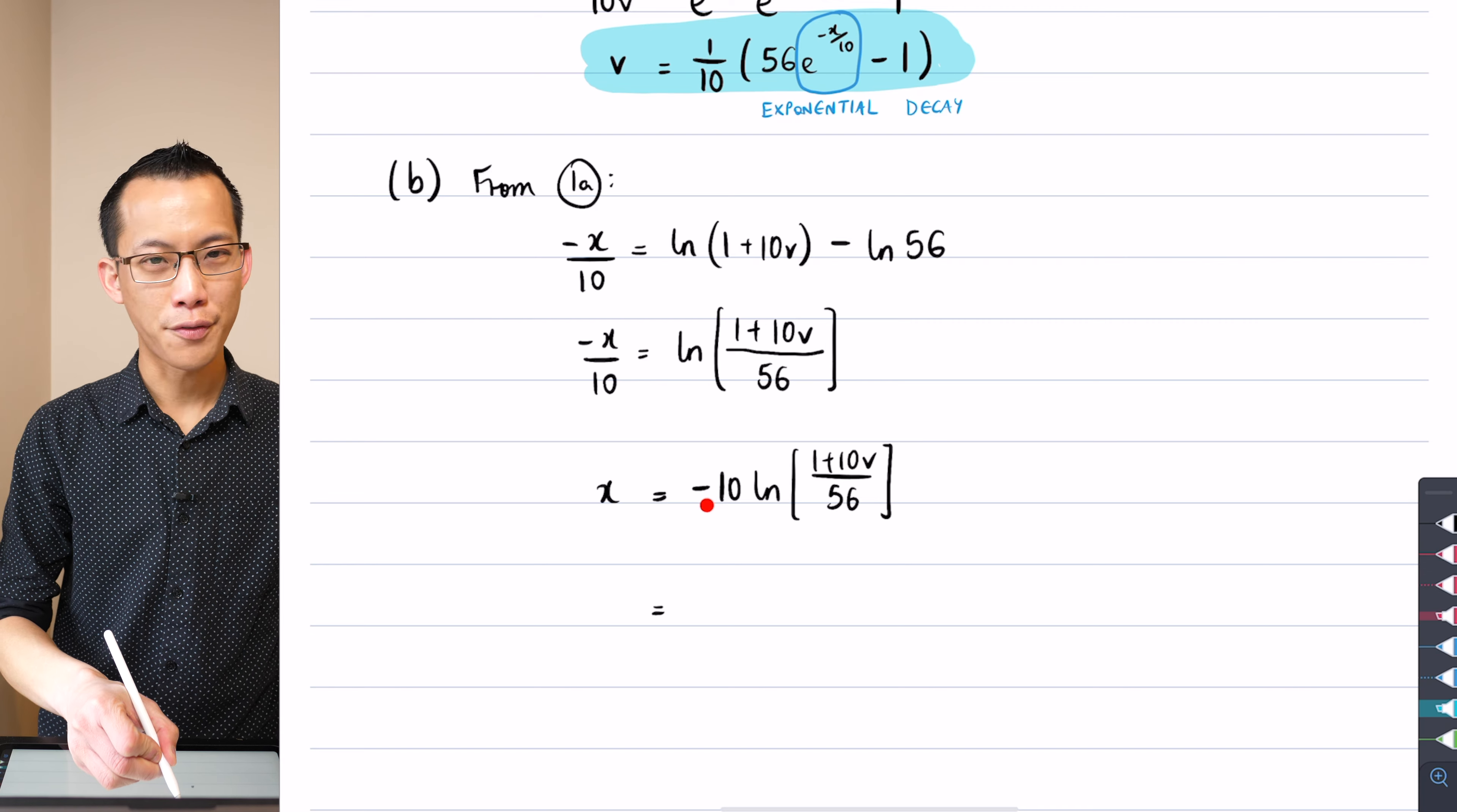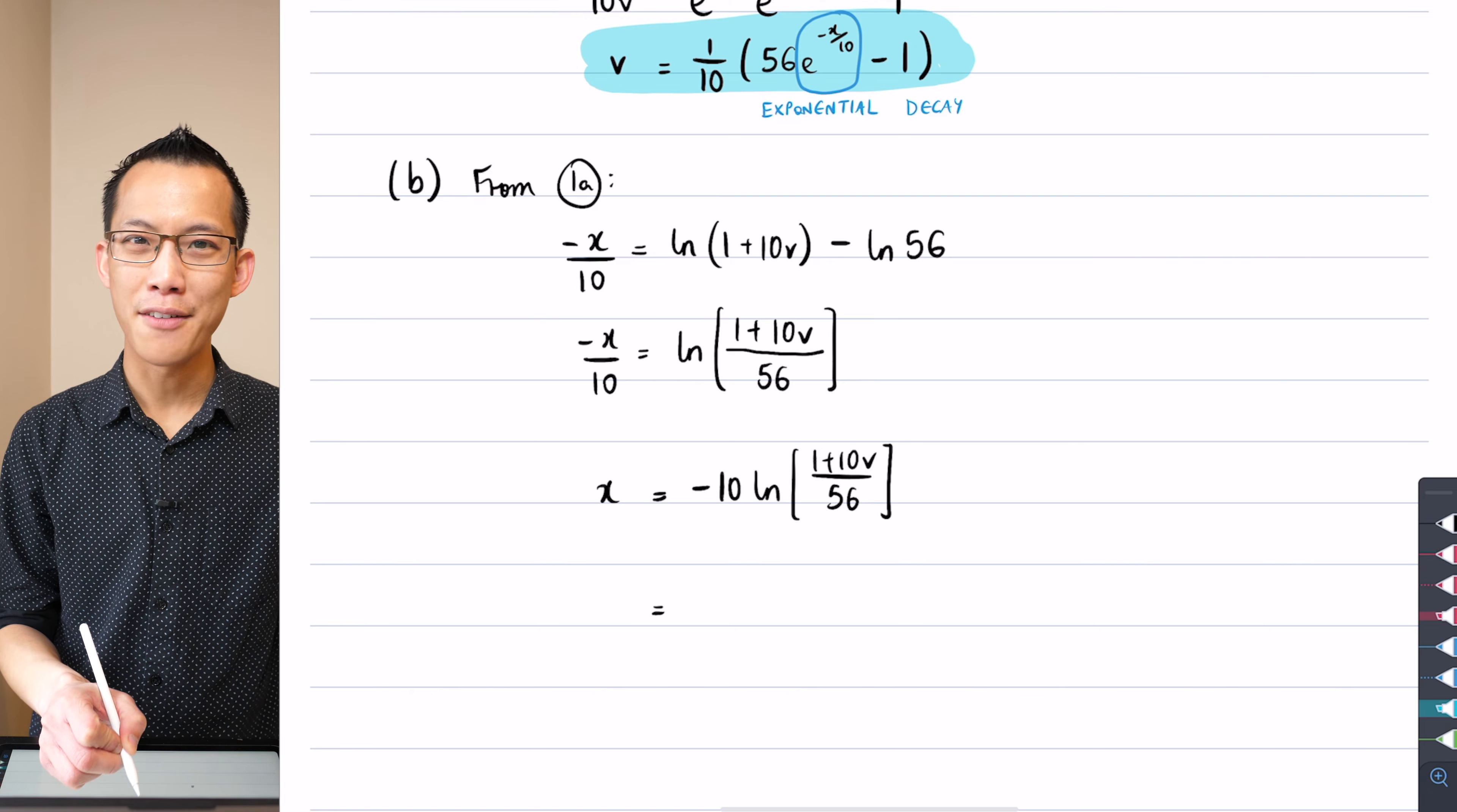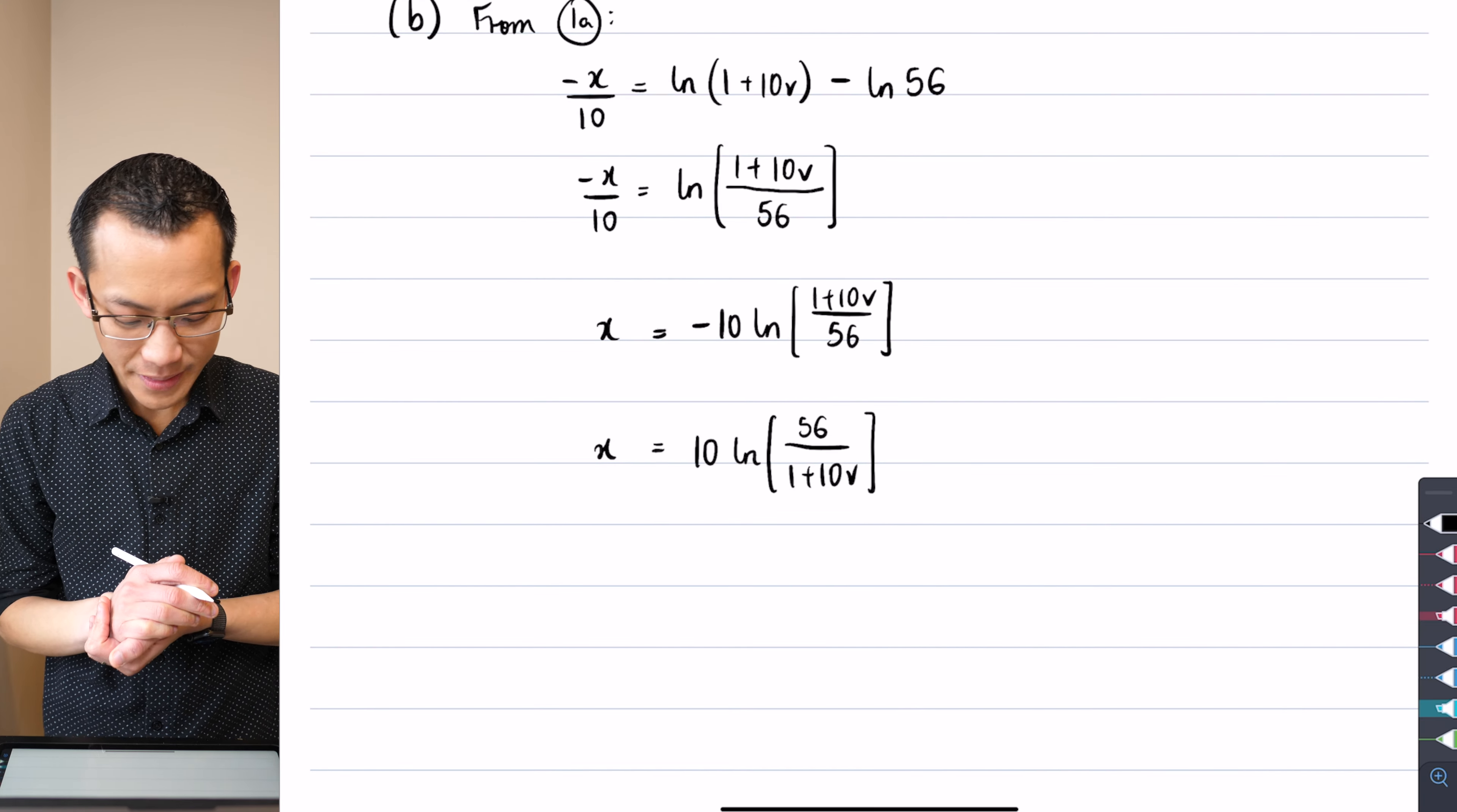The power law for logs tells me that that minus one, I could bring it inside and make it the power up the front, or up the top rather, of what's on the inside of the log term. So this could be all raised to the power of negative one. And you guys know what raising something to the power of negative one does. It takes the reciprocal. So I'm going to write, that 10 is still out the front there. That log remains unchanged, but I'm going to flip upside down this using my log laws.